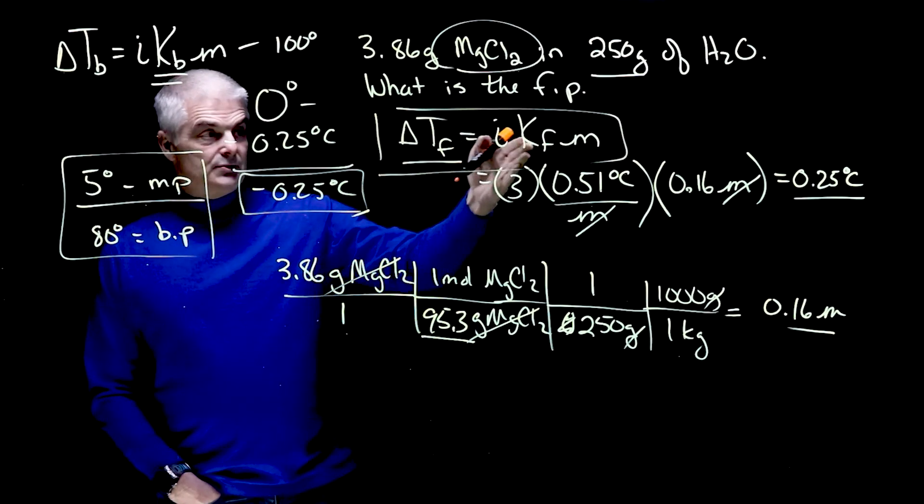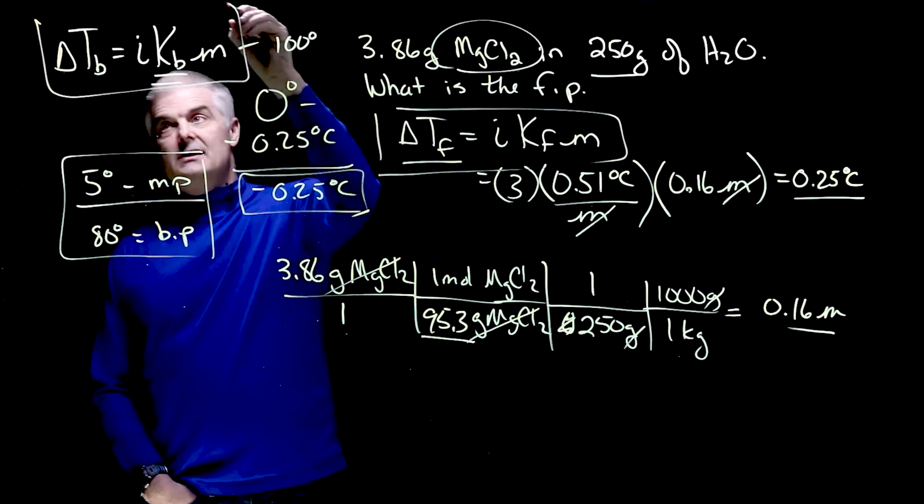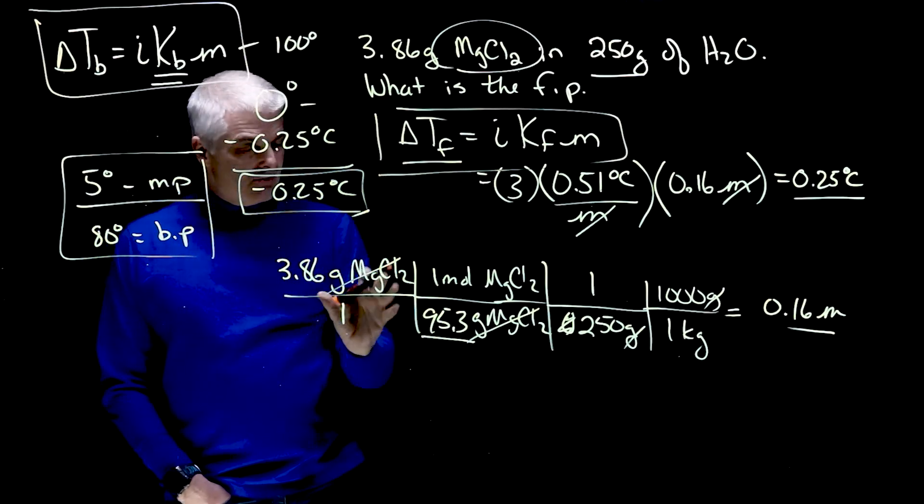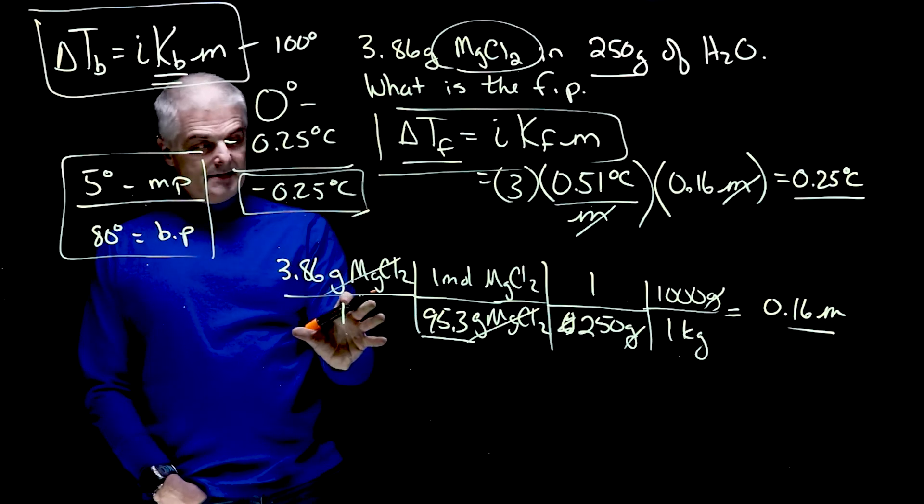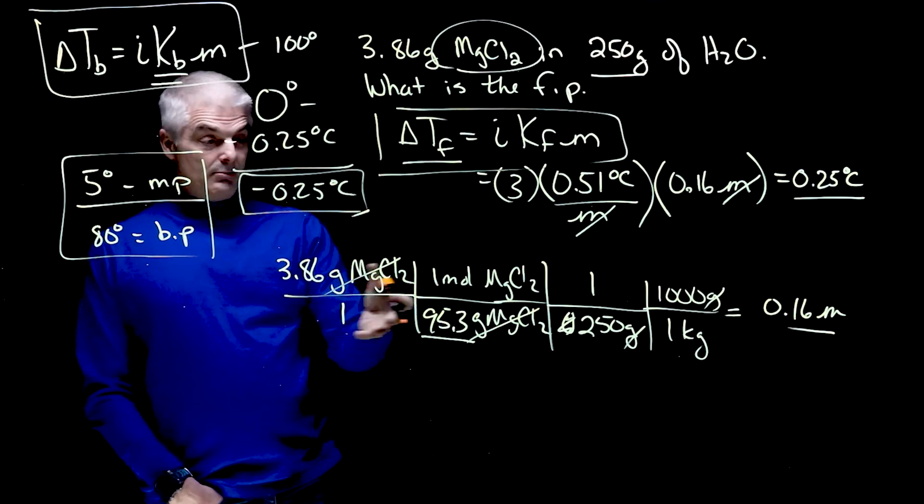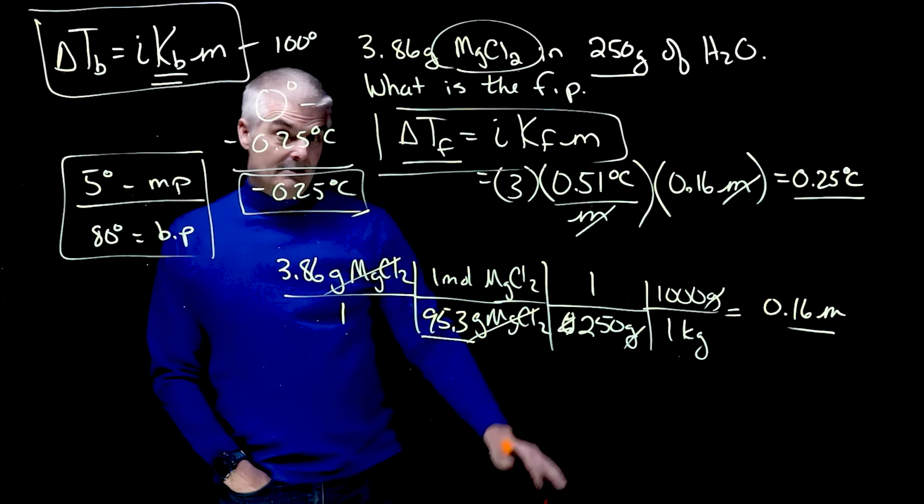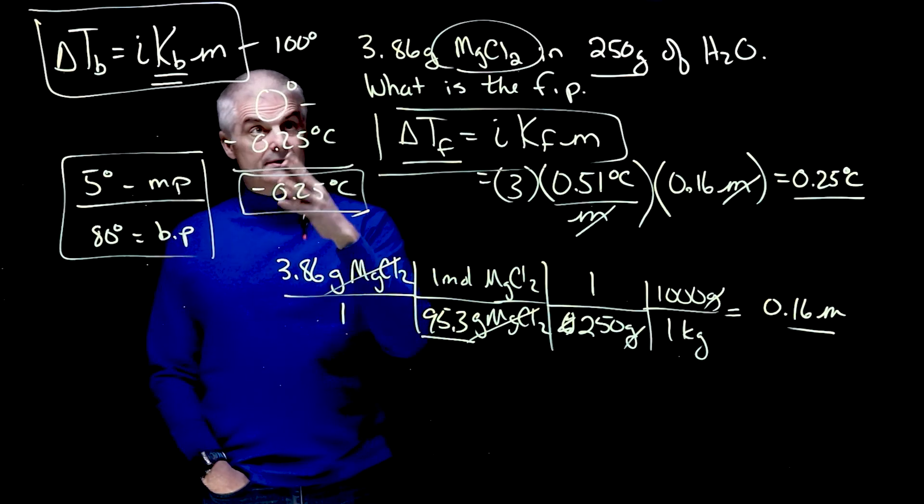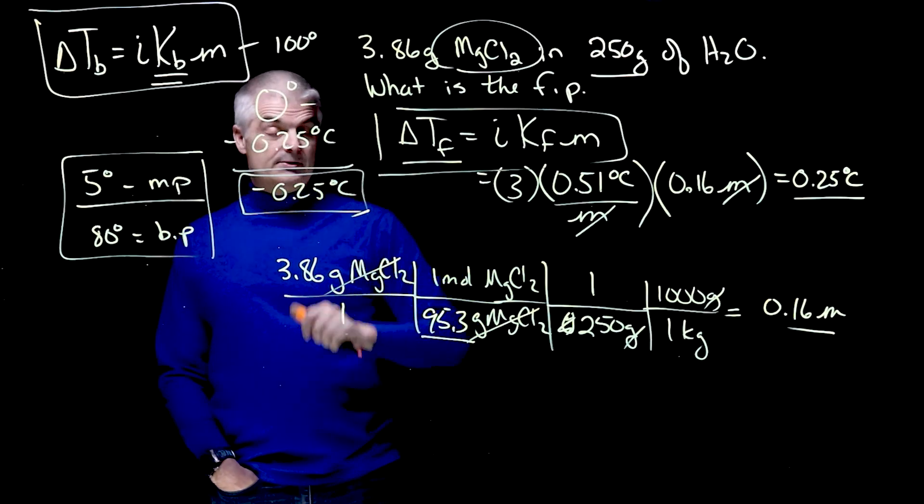You use one of these equations, delta T F equals I K F M or delta T B equals I K B M. And then you've got to calculate the molality and you've got to play a little mathematics to get the answer. And there you have it. Molality, colligative property questions.